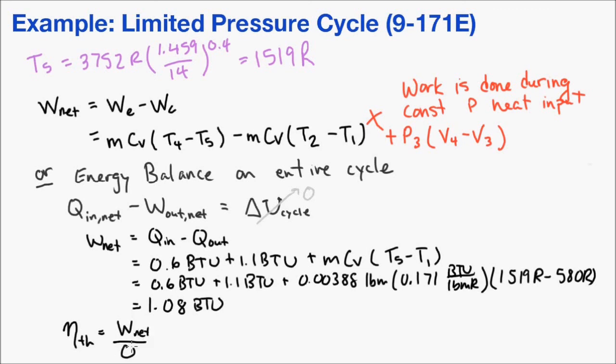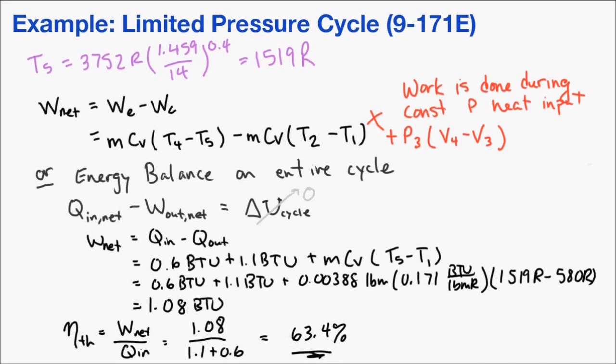So to find the thermal efficiency, we divide the network by the heat input. So we have 1.08 divided by the sum of 1.1 and 0.6. So we get a thermal efficiency of 63.4 percent.